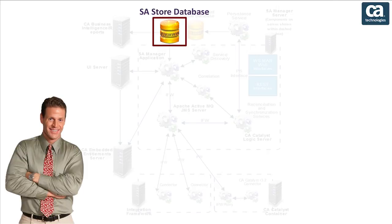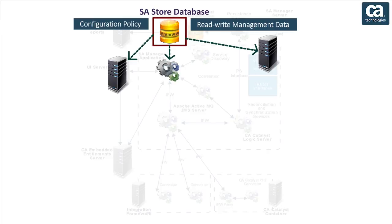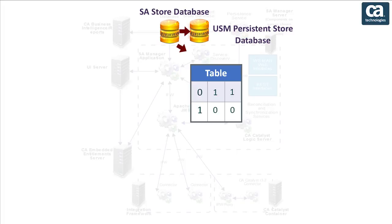Let us move on to the next component: SA Store. The SA Store is the central repository for all CASOI configuration and management data. It is a relational database from which the other CASOI components retrieve their configuration policy and read-write management data about the state of services and resources. The SA Store includes the CA Catalyst Persistence Store, which maintains a record of reconciled USM data — that is, CIs, alerts, and relationships — as well as tables that contain data specific to CASOI, such as escalation policies and service models.